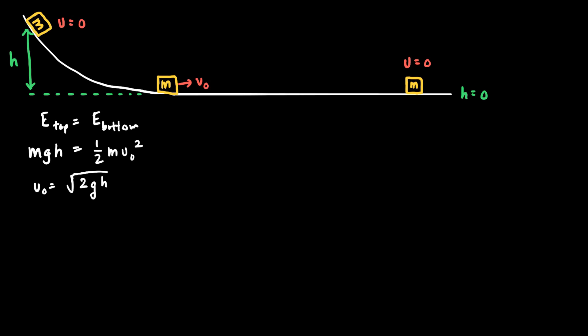Now, once the cart is at that position where it has a velocity v₀, it applies the braking force. The braking force is equal to minus k — a constant — times v, the velocity of the cart at any particular moment in time. So the braking force depends on the velocity of the cart and the constant k.